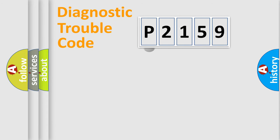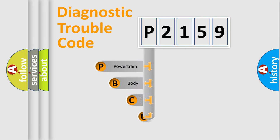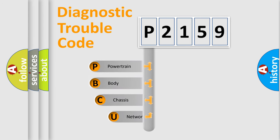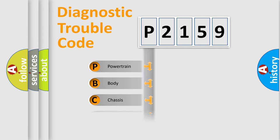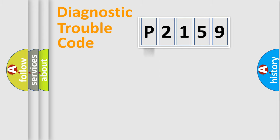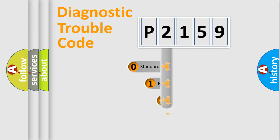First, let's look at the history of diagnostic fault code composition according to the OBD2 protocol, which is unified for all automakers since 2000. We divide the electric system of an automobile into four basic units: powertrain, body, chassis, and network. This distribution is defined in the first character of the code.